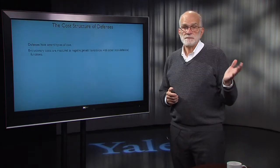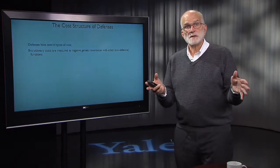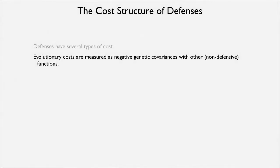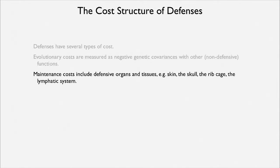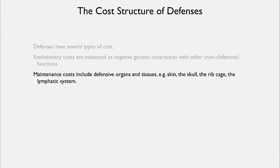Defenses have a certain kind of cost structure with several different types. Evolutionary costs are measured in the long term, at the population level, as a negative genetic covariance — for example, the immune system might be genetically covarying with reproduction, which we can see when we manipulate the immune system with hormones. Maintenance costs include things like defensive organs and tissues. Our skin is really our first line of defense against invasion by most pathogens, as is our mucosa, lung epithelium, and intestinal epithelium. The skull, the rib cage, and all such organs protect key tissues from injury. These are things that need to be maintained, and they are nevertheless significant costs.